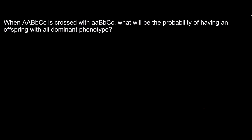Now let us proceed to another question, but this time we are dealing with phenotype. Just like before, we need to know the phenotypic ratios. The parents are still the same, but now we are looking for an offspring having all dominant phenotype. For the first trait, all offspring are heterozygous and all will express the dominant phenotype, so we put four over four to represent 100%.